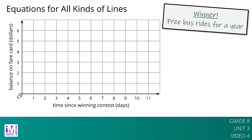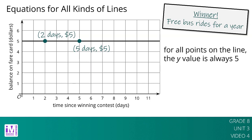Let's think back to Elena's bus fare card. Since she won a contest where the prize was a special pass that gives her free bus rides for a year, she did not need to use her regular fare card, which had $5 on it when she won the prize. Here is the graph of the amount of money on her fare card. Horizontal lines in the coordinate plane represent situations where the y value doesn't change at all while the x value changes. We can describe this horizontal line as: for all points on the line, the y value is always 5. An equation that says the same thing is y equals 5.